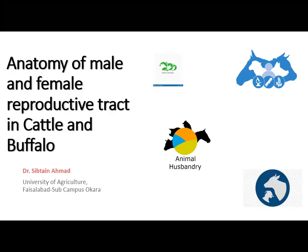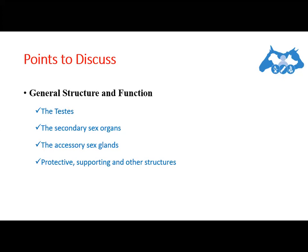This is the second part regarding the anatomy of male and female reproductive tract in cattle and buffalo. In the previous part, the female reproductive tract was discussed, and in this video the male reproductive tract of bull will be covered. The lecture will discuss the general structure and function including the testes, secondary sex organs, accessory sex glands, and protective supporting structures.